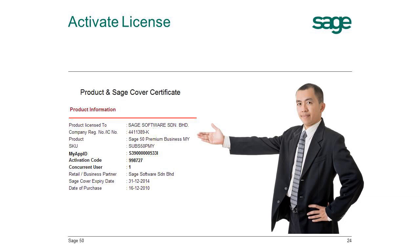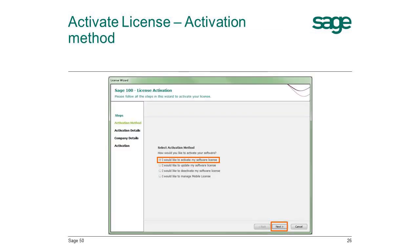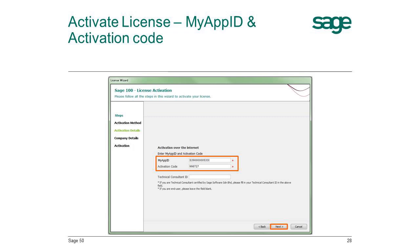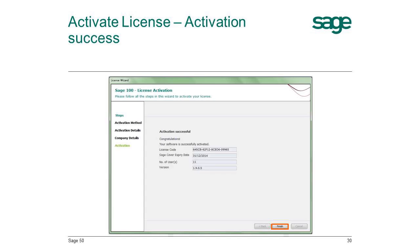Here is my product certificate which I received with my email. To activate the license, after logging in to Sage 50, click on the Manage License link. Select 'I would like to activate my software license' and click Next. Enter the MyAppID and activation code as per your product certificate, then click Next. Your MyAppID will be validated and your registered company information will be shown — ensure this is correct. Click Next, then Finish, and your license is activated successfully. Your application will restart automatically.